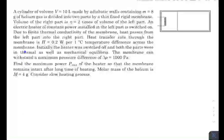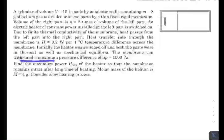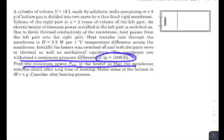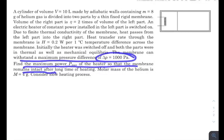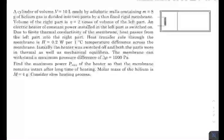Initially the heater was switched off and both parts were in thermal as well as mechanical equilibrium. The membrane can withstand a maximum pressure difference of del P. Find the maximum power of the heater so that the membrane remains intact after long time of heating. Molar mass of helium is M = 4 g. Consider slow heating process.